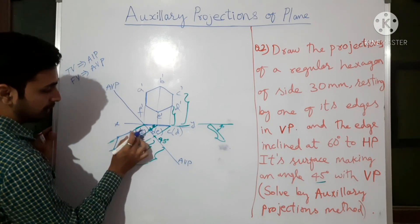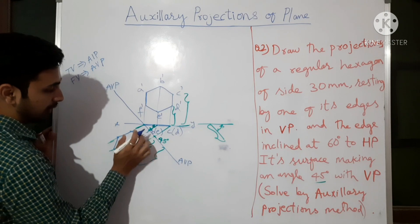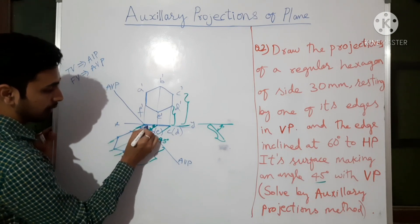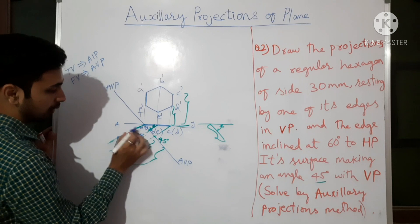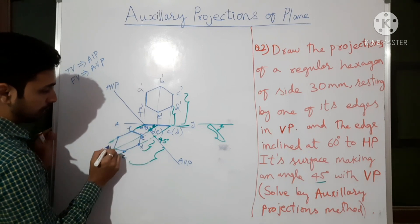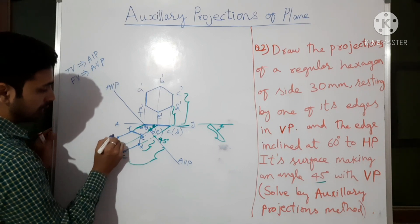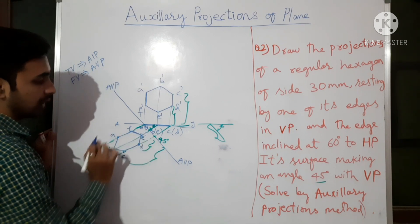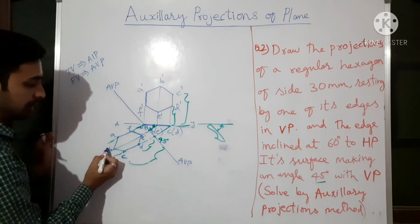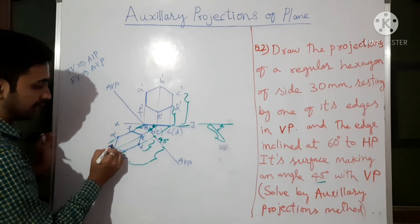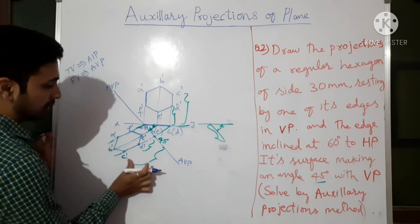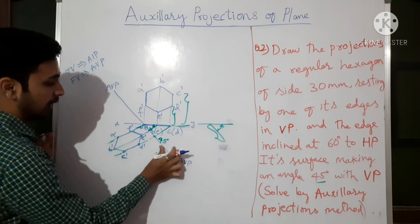Then E and A-bracket-F are placed accordingly. So the points are A, B, C, D, E, F. This becomes the top view and the other becomes the front view, where dashes come: A-dash, B-dash, C-dash, D-dash, E-dash, F-dash. This is how the first stage is completed.